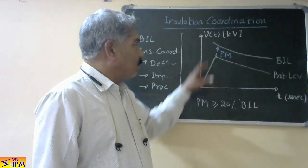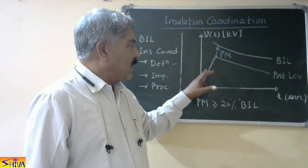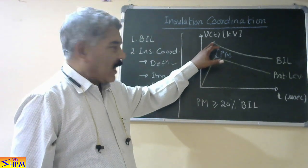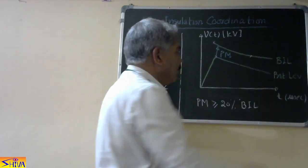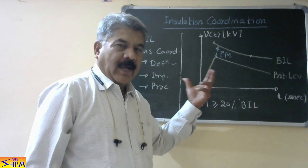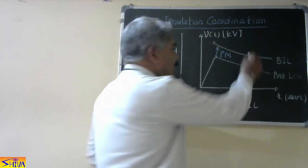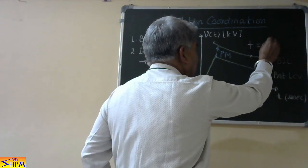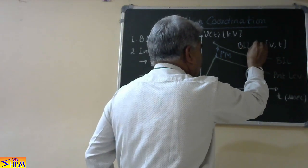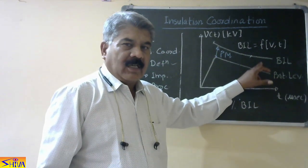Now if you look at the BIL — the Basic Impulse Insulation Level — this is a volt-time characteristic. Along the Y-axis we take voltage and along the X-axis we take time. A point on this curve means the insulation can sustain that much voltage for that much time. As time increases, the voltage-sustaining capability of the insulation reduces. So the BIL is a function of voltage and time, and it is also called the impulse volt-time characteristic.